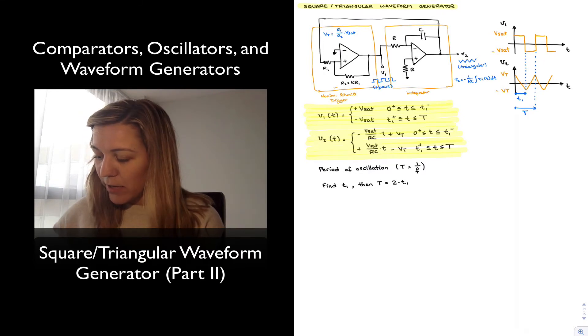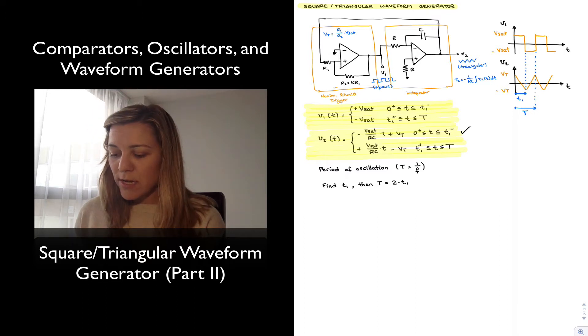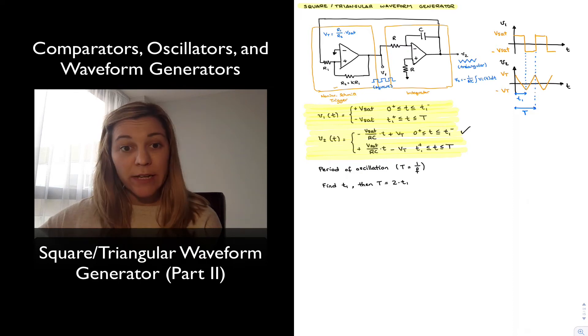If I take, for example, I will take either one of them, but let's imagine I take my first equation here for V2. This is the equation for V2 within the first half period from zero to T1, equal to negative vSat over RC times T plus vT. And we know that for T equals T1, the value of that expression, the value of V2 is equal to negative vT.